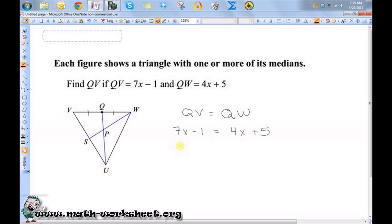Okay, so let's subtract 4X from both sides, giving me 3X minus 1 equals 5. Add 1 to both sides, giving me 3X equals 6. And then divide both sides by 3, giving me X is equal to 2.